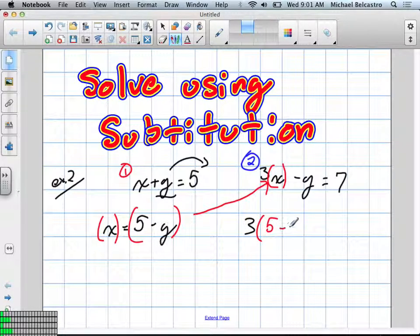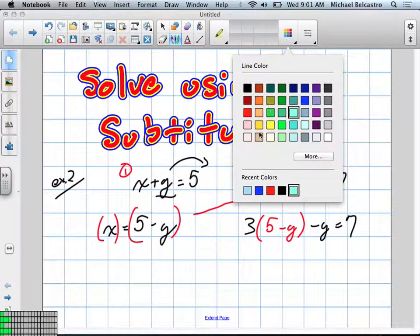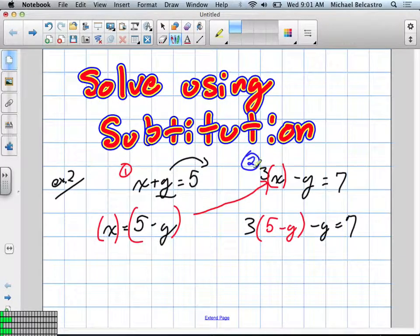times 5 minus y, minus y equals 7. So if you noticed, what I've done here is I've replaced this x with 5 minus y, which is exactly what we had as equal to each other on the left side.